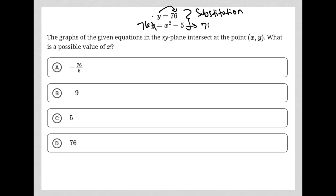This would say 76 equals x squared minus 5. Of course, I can then add 5 to both sides of this equation, and I'd have 81 is equal to x squared, to which I can square root both sides and get x is equal to plus or minus 9.